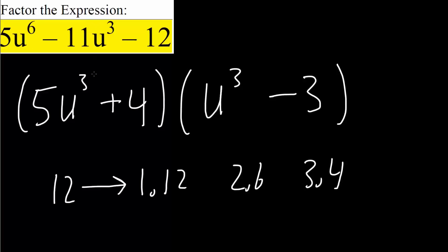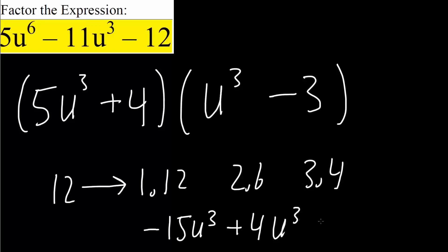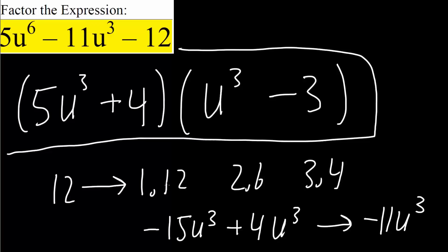In the last problem both binomial coefficients were 1, making addition straightforward, but here it's different. 5u³ times negative 3 gives negative 15u³, and 4 times u³ gives positive 4u³, combining to negative 11u³ for the middle term. So this is the final answer, and other pairs like 1 and 12 or 2 and negative 6 would not work.